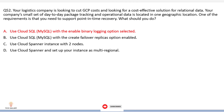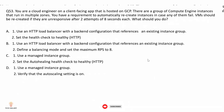Option B: use Cloud SQL with the Create Failover Replicas option enabled — creating a failover replica does not support point-in-time recovery. Option C: use Cloud Spanner with two nodes — not cost-effective because it increases cost. Option D: use Cloud Spanner set up as multi-regional — again, using Cloud Spanner multi-regional also increases cost and is not a cost-effective solution. So option A, Cloud SQL with binary logging enabled, is the correct answer.